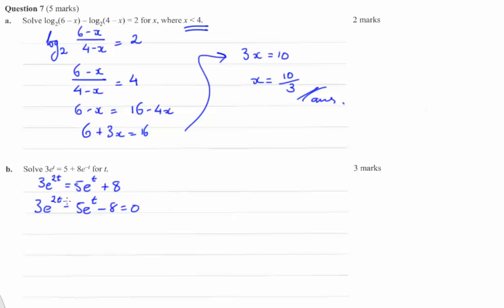Let's make a substitution here. So we're going to let e to the t equal a. That leaves us with 3a squared minus 5a minus 8 equals 0. Look at that. They're always sneaky. They always slip in a non-monic quadratic there for you to solve. They never say it explicitly, but they expect you to be able to solve these.